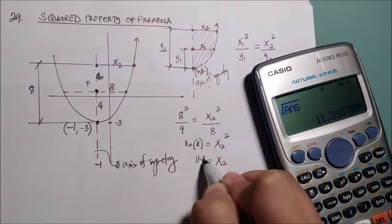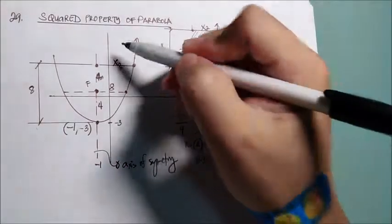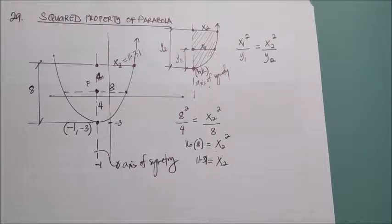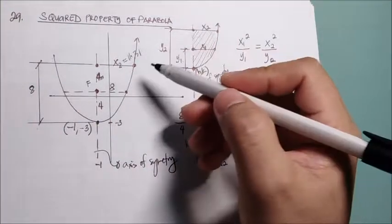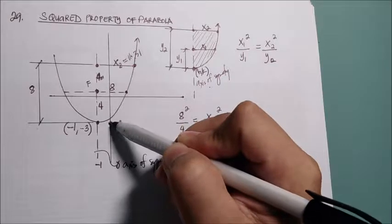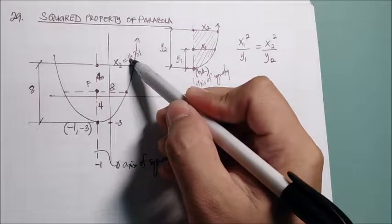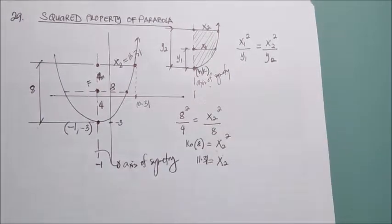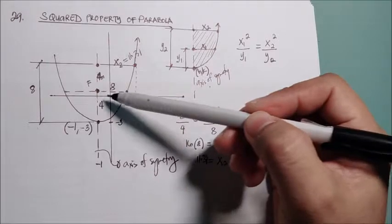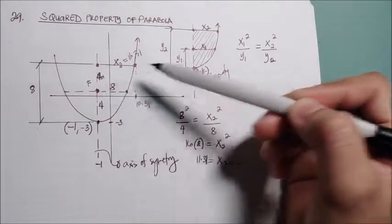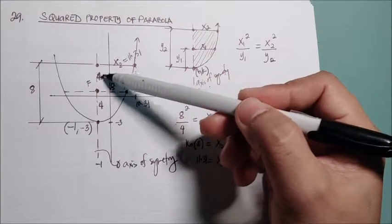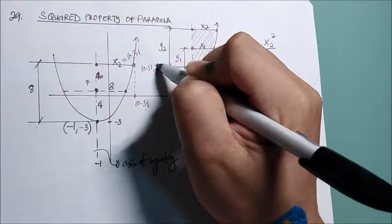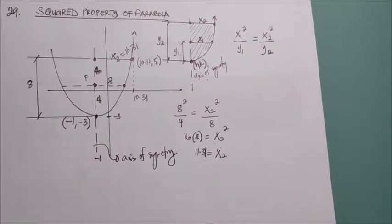So, this distance is 11 point 31 units, or in terms of meters. So therefore, the coordinates now of this point will be from this point, that is negative 1. So you have to subtract 1 unit here, that is 10 point 31. This will be at 10 point 31, and along, if this is negative 3, that is 1, that is 4, that is 5. So the coordinate now of this one will be 10 point 31 and 5. That's the importance of squared property of parabola.